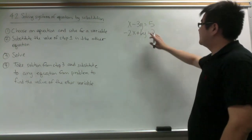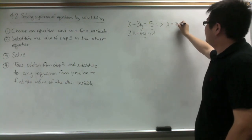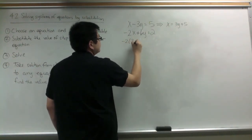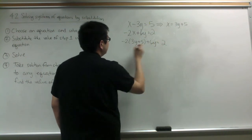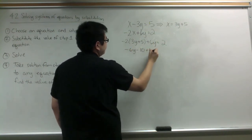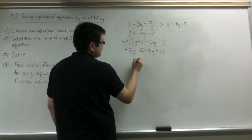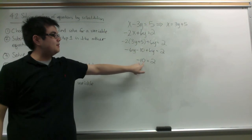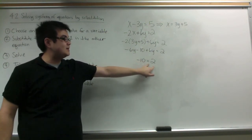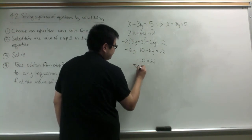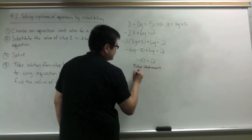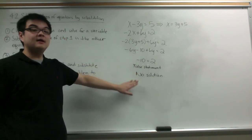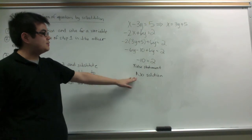In our next system of equations, I'm going to solve for x for the first one: x equals 3y plus 5. I'm going to take this value and substitute it in for x. So I have negative 2 times 3y plus 5 plus 6y equals 2. Distribute the 2 and combine like terms. The y becomes 0, and I end up with negative 10 equals 2. Since this is a false statement, that means there is no solution. Conversely, if you end up with a true statement, you will get all solutions. So for this one, it is no solution.